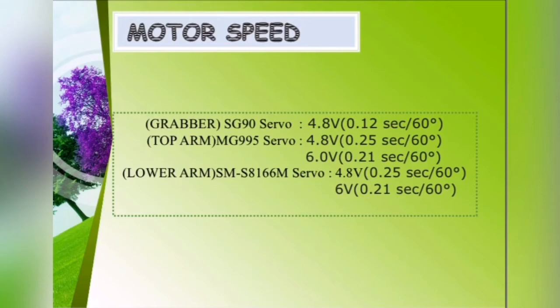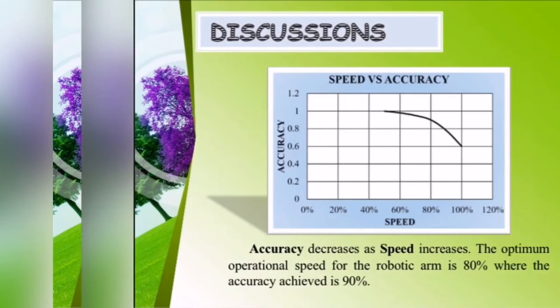For the motor speed of the rubber seed planter, we ran each component at 4.8V. For the grabber, it moves 0.12 seconds per degree. For the top arm, it moves 0.25 seconds per degree, as well as the lower arm at 0.25 seconds per degree.